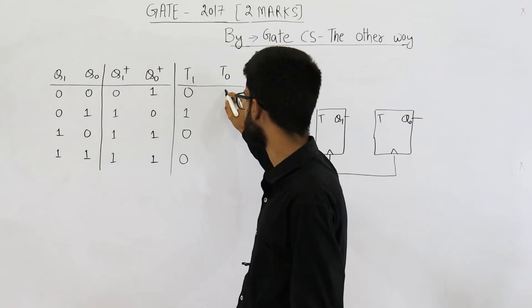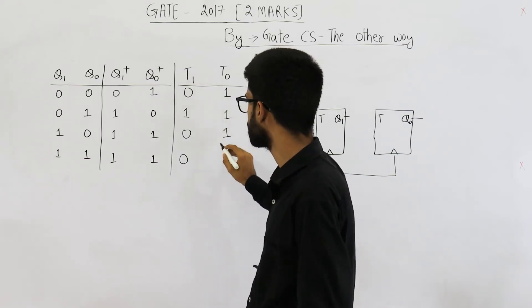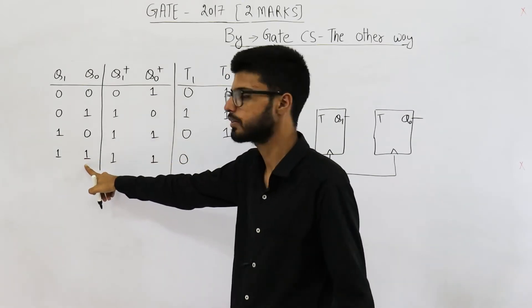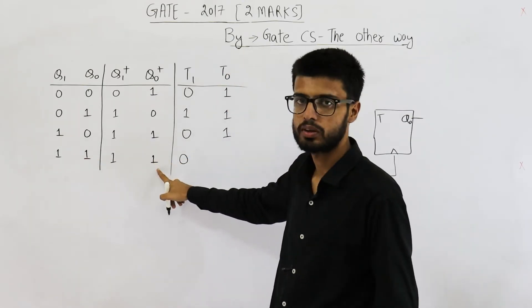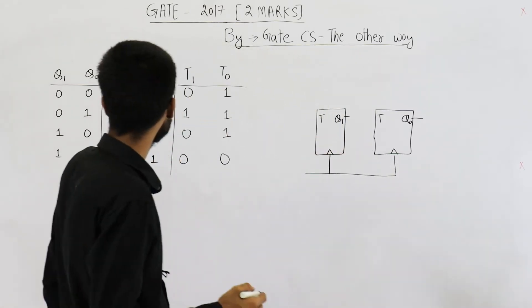Here we want to change, so it is 1. Here also 1. Here also we want to change. And here value was earlier 1, now also it is 1. So we don't want to change, that's why I am writing 0.